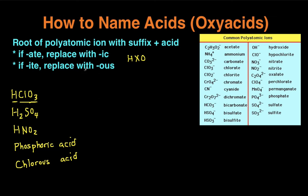And you can see it ends in ATE. So if it ends in ATE, we're going to replace it with IC. Instead of chlorate, it's going to become chloric, and then we just add acid at the end of it.